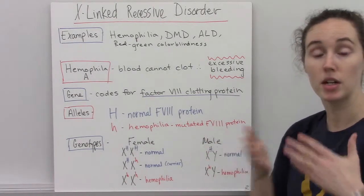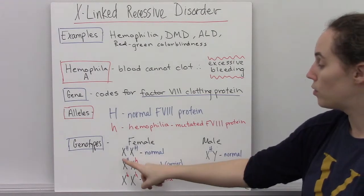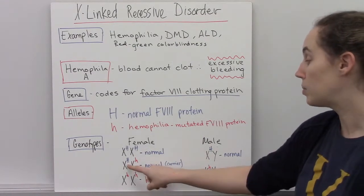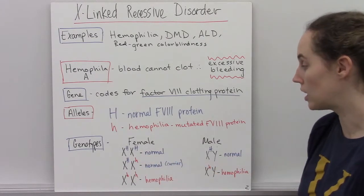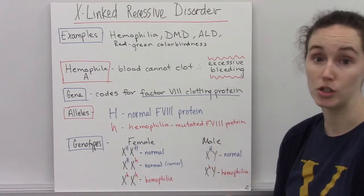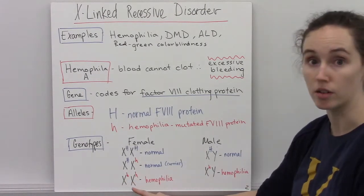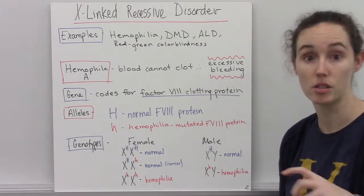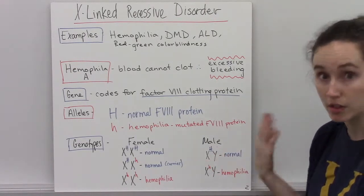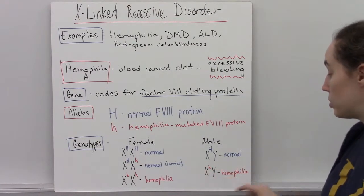Because males and females have different numbers of X chromosomes, they can have different genotypes. Females can be homozygous dominant and therefore have a normal phenotype. They can be heterozygous — having one of each allele — but since normal is dominant over hemophilia, they would show the normal phenotype. However, they would also carry the hemophilia gene and could possibly pass it on to their offspring. A female could also be homozygous for the hemophilia allele, in which case she would have hemophilia. Males, since they only have one copy of the X chromosome, can either be normal with the normal allele on their singular X chromosome, or if they have the hemophilia allele on that X chromosome, they would show the hemophilia phenotype.